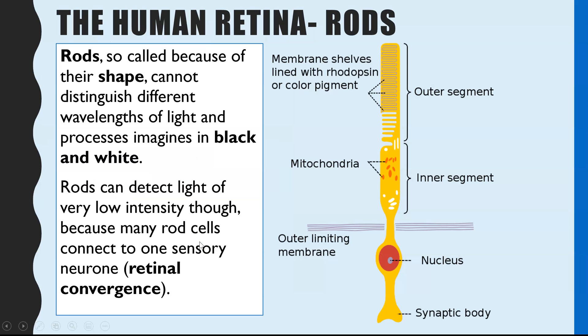So let's start with the rod cells. First of all, they're called rods because they are rod-like in shape. And these are the cells which do not distinguish between different wavelengths of light, or in other words colors. Instead, it just processes images in black and white. Now they can detect light at very low light intensities. And that is because of this concept called retinal convergence. So we'll have a look at what that term means.